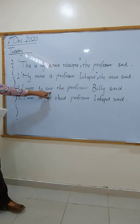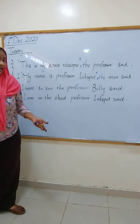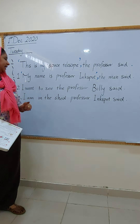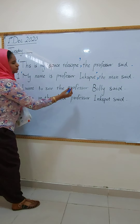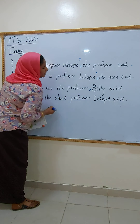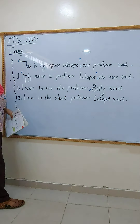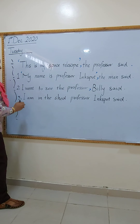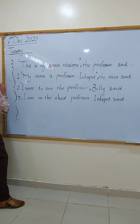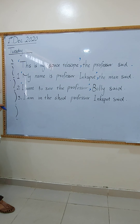Go to number two: 'I went to see the professor,' Billy said. What Billy said — he said, 'I went to see the professor.' So I have to put the opening quotation mark here and the closing one here. This is the speech.